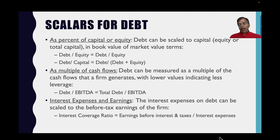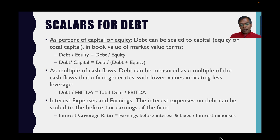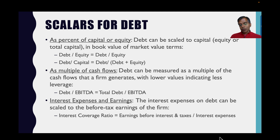Comparing raw dollar debt values across companies would be meaningless, so to get measures you can compare across companies, I use three scalars. First, I scale debt to total capital — debt plus equity — or to just equity. Debt divided by equity is called the debt-to-equity ratio; debt divided by capital (debt divided by debt plus equity) is the debt-to-capital ratio. Each has its use, and I report both ratios.